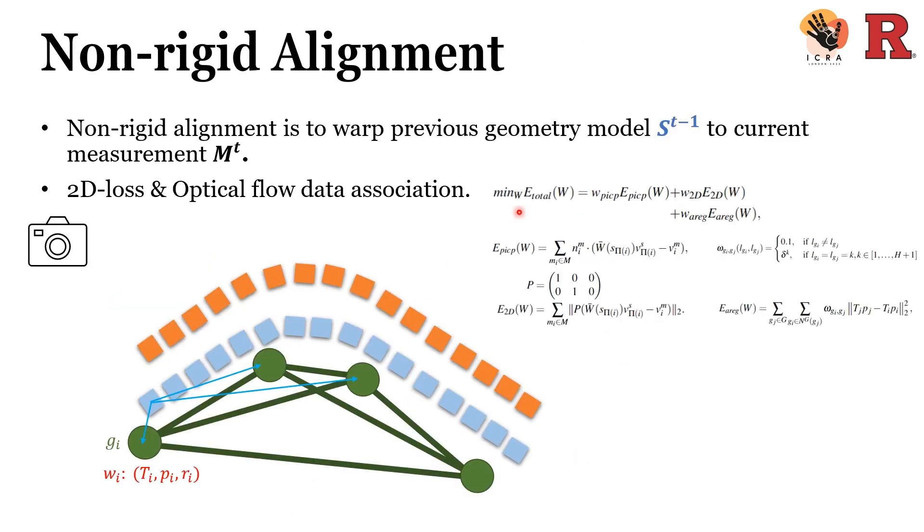Finally, the optimization term is written as this. By optimizing this term on the warping field, we are able to align the geometry from last frame to current measurement. After the non-rigid alignment, we will perform geometry update and so on. Due to time limit, we cannot discuss them in very detail.